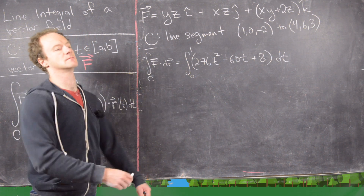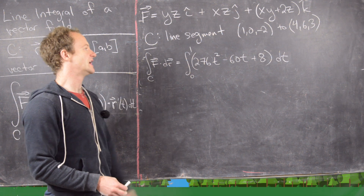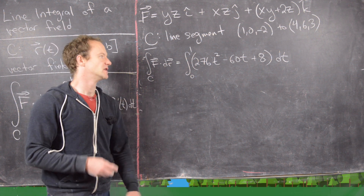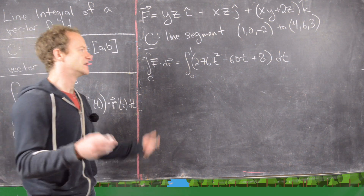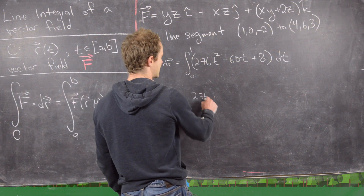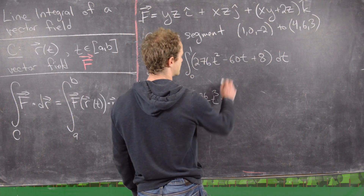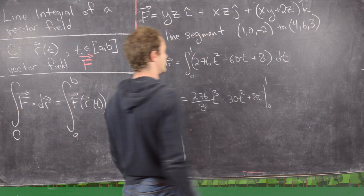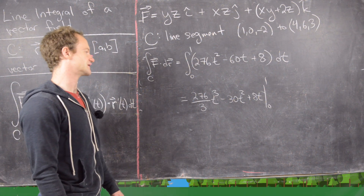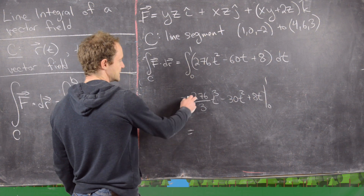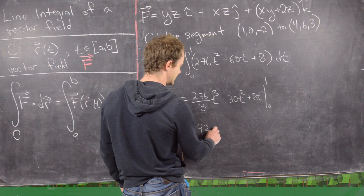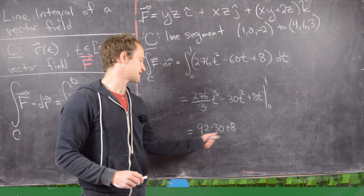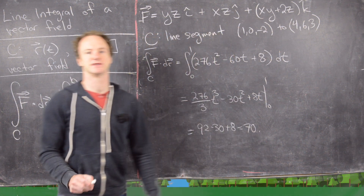After simplification, the line integral equals the scalar integral from 0 to 1 of 276t² minus 60t plus 8 dt. Integrating: (276/3)t³ minus 30t² plus 8t evaluated from 0 to 1. Evaluating at 0 gives 0, so we get 92 minus 30 plus 8, which equals 70. The final answer is 70.